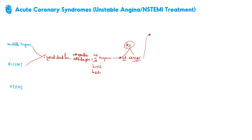What are the hallmarks of treatment for unstable angina and NSTEMI? We divide the treatment into several categories. The first category is symptomatic relief — here we have things like nitroglycerin, which reduces preload and eventually reduces myocardial oxygen demand, slowing down the damage. You can also give pain medications here, such as morphine.